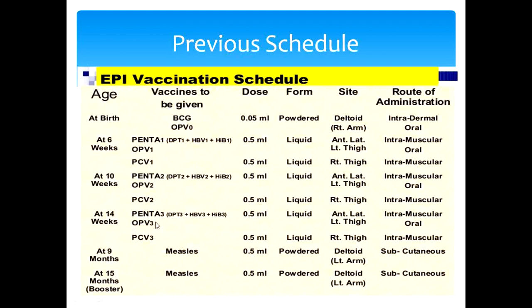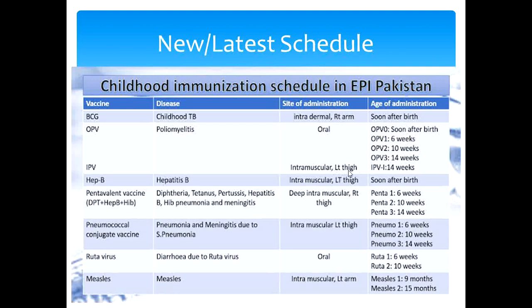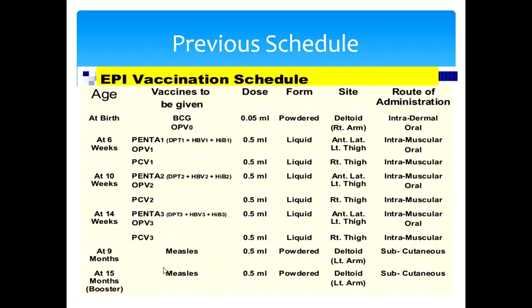At 14 weeks: Penta 3rd dose — DPT3, hepatitis B 3rd dose, and HIB 3rd dose — 0.5 ml intramuscularly in the anterolateral left thigh. Pneumococcal vaccine 3rd dose — 0.5 ml in the right thigh intramuscularly. OPV3 — 2 oral drops. We also give injectable polio vaccine (IPV) intramuscularly in the left thigh at 14 weeks. At 9 months: measles vaccine 0.5 ml subcutaneously in the left deltoid arm. At 15 months: measles 2nd dose 0.5 ml subcutaneously in the left deltoid arm.